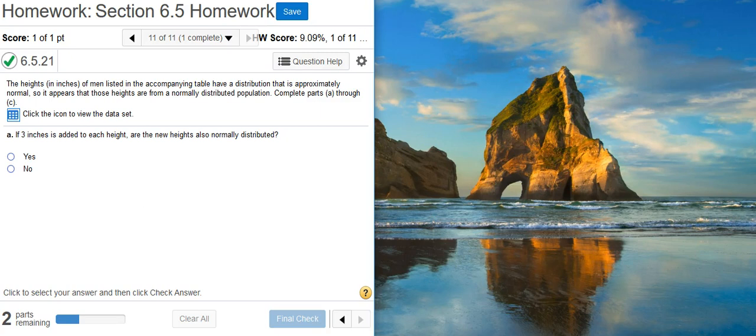Here's our problem statement. The heights in inches of men listed in the accompanying table have a distribution that is approximately normal. So it appears that those heights are from a normally distributed population. Complete Parts A through C. To verify that, we're going to have to take the data and transform it.